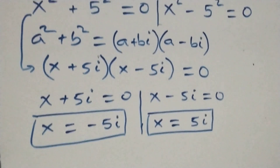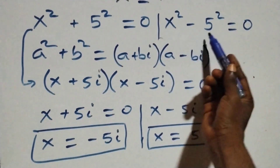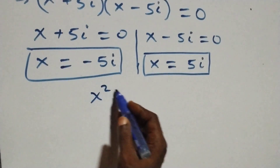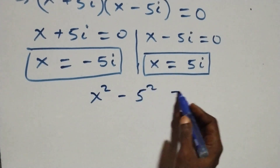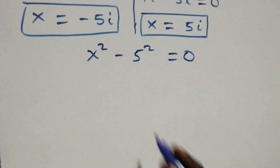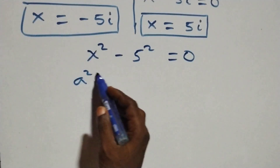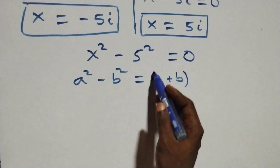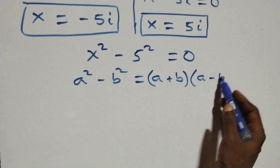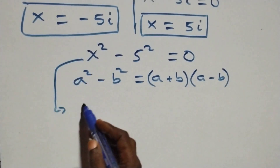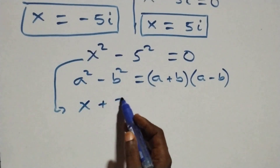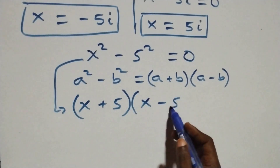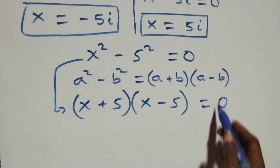Solving the second case: x squared minus 5 squared equals 0. This also follows from the difference of two squares — a squared minus b squared equals (a plus b)(a minus b). So this becomes (x plus 5)(x minus 5) equals 0.